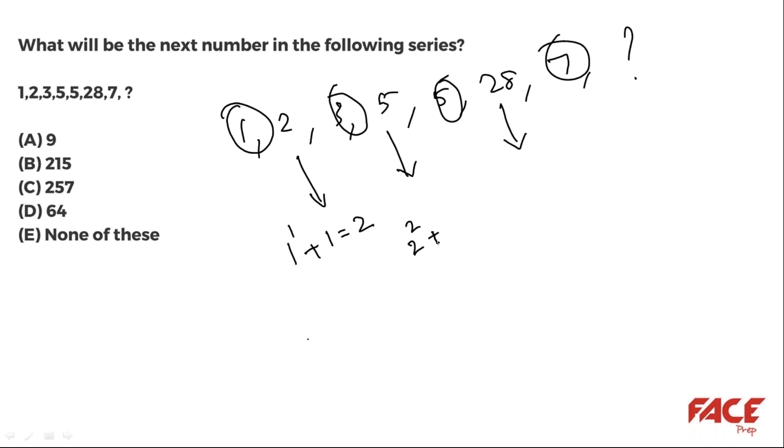Two, five, twenty-eight. So two goes like this: one to the power one plus one equals two. Five: two squared plus one equals five. Twenty-eight is three cubed plus one. What is three cubed? It's twenty-seven, twenty-seven plus one.